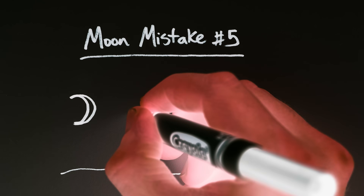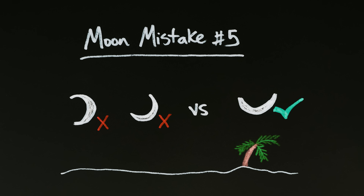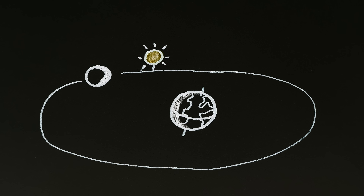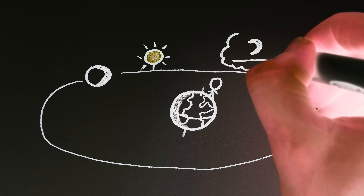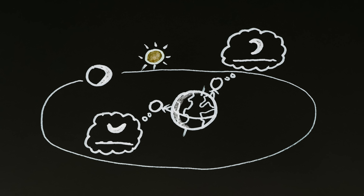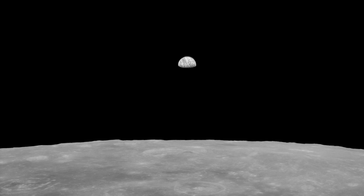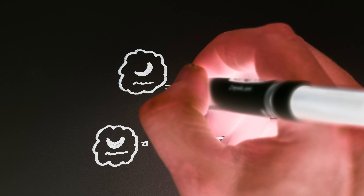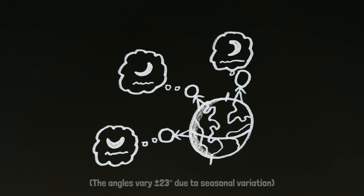Mistake number five is having the moon in the wrong orientation for the location on Earth. Because the moon's orbit is approximately aligned with the Earth's equator, an approximately horizontally pointing crescent only happens when you're standing near the poles, while a cup-like crescent happens near the equator, where you've rotated yourself 90 degrees relative to the Earth's axis. This photo of the Earth was taken as the Apollo spacecraft traveled along the moon's equator, and here the Earth's crescent points vertically, not horizontally. Intermediate latitudes get intermediate angles, and the angles also vary a bit by the seasons.